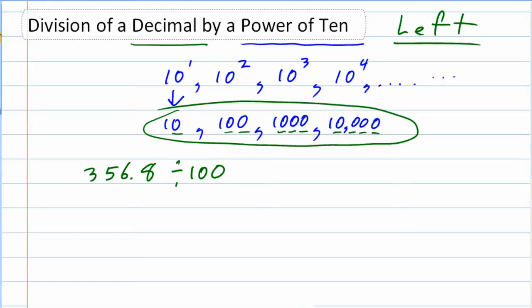So we're moving it to the left. We take our first number, which here is 356.8, and we move it two digits, two because 100 has two zeros, two digits to the left, which is then going to put it behind the three so that our answer is 3.568.